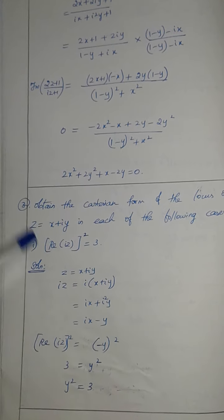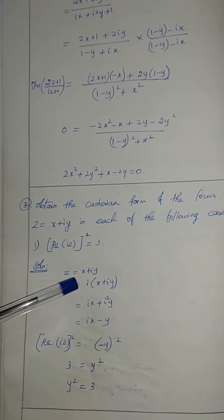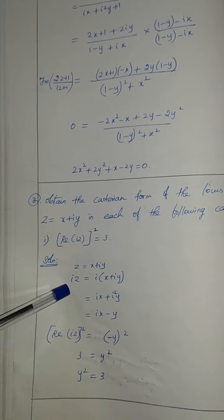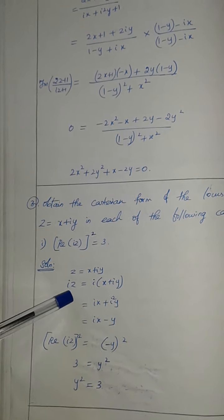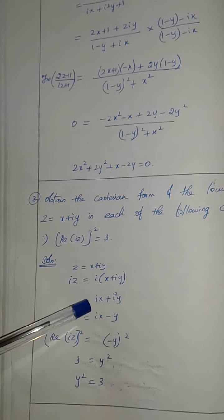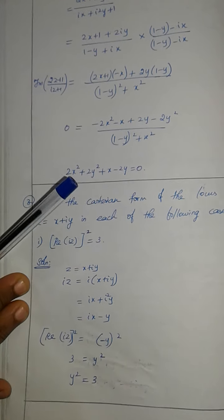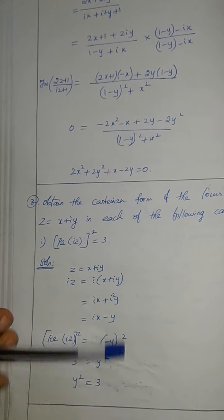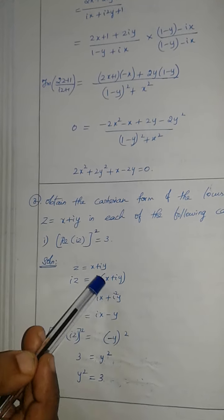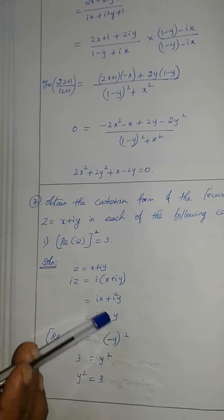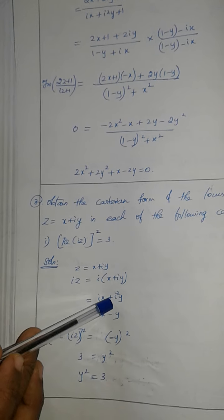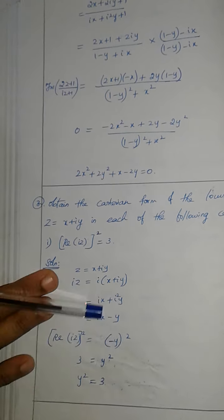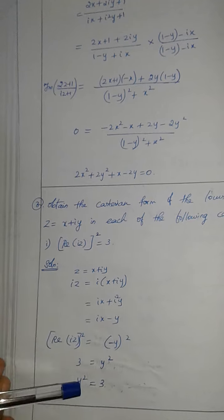Here, I have the value of Z. Z is equal to x plus iy. First, in the bracket, we have iZ calculated. iZ is equal to i of x plus iy. By normal multiplication: ix plus i²y. Since i² is minus 1, iZ equals ix minus y.